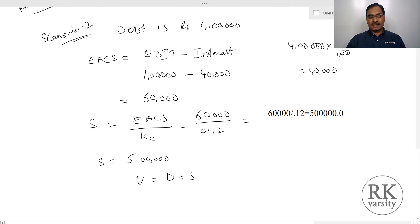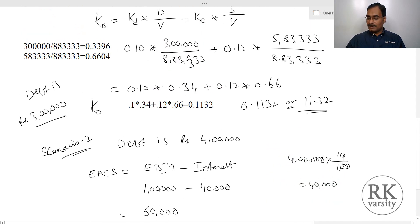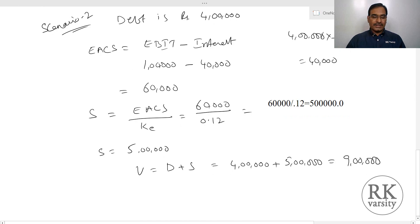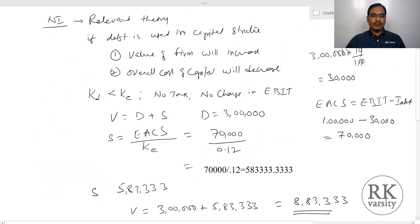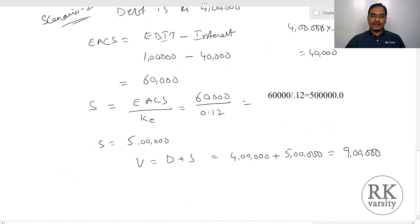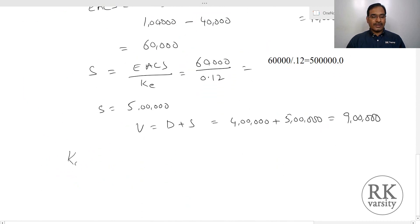So S equals 5 lakhs. Value of the firm equals D plus S: debt is 4 lakhs and value of equity is 5 lakhs, giving 9 lakhs. Comparing with the previous case — firm value was 8,83,333 when debt was 3 lakhs — by increasing debt from 3 lakhs to 4 lakhs, the value of the firm increased. This proves the NI approach assumption that including debt increases firm value.